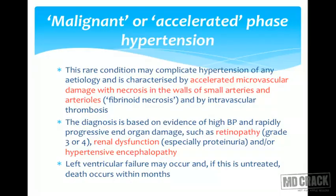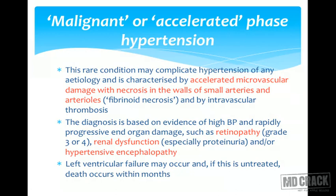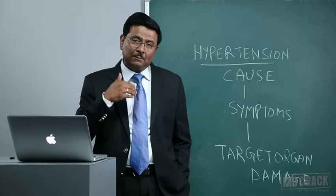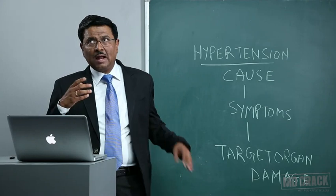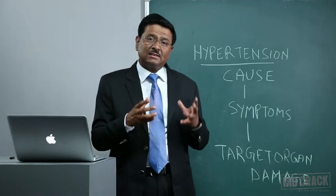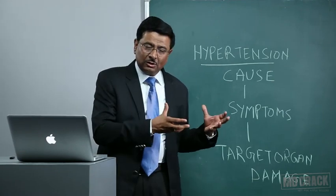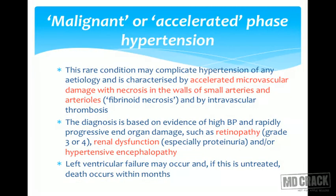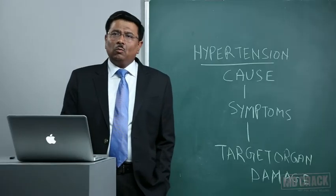A few words about malignant or accelerated phase hypertension: this rare condition may complicate hypertension of any etiology. It is characterized by accelerated microvascular damage with fibrinoid necrosis in the walls of small arteries and arterioles, and by intravascular thrombosis. The diagnosis is based on evidence of high BP and rapidly progressive end-organ damage such as retinopathy (grade 3 and 4), renal dysfunction with excessive proteinuria, and/or hypertensive encephalopathy. Left ventricular failure may occur, and if untreated, death occurs within months.